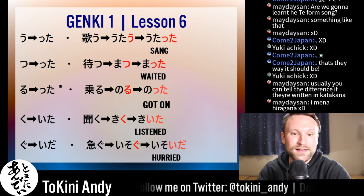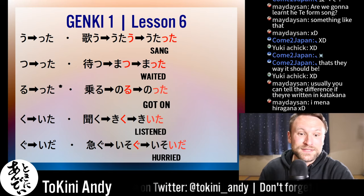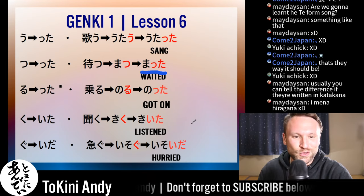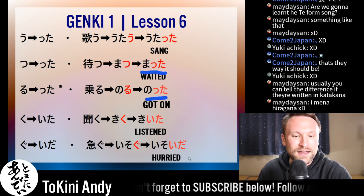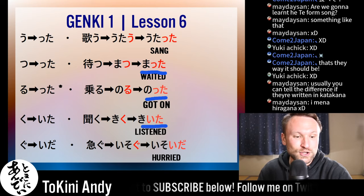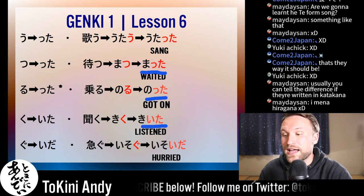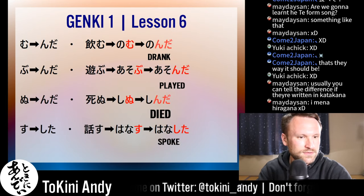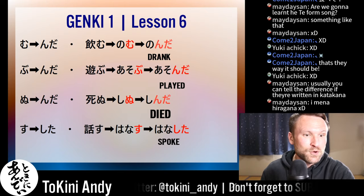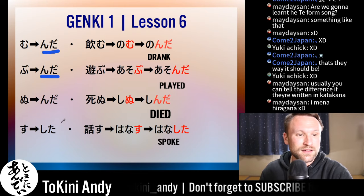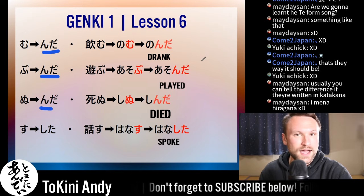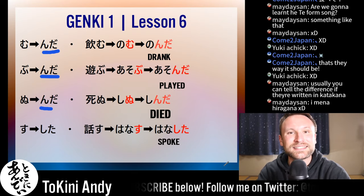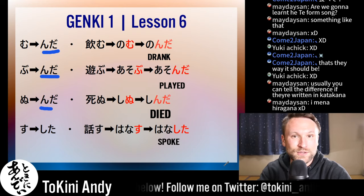Just super fast: 'utau' becomes 'utatta' — I sang. 'Matsu' becomes 'matta.' 'Noru' becomes 'notta' — I got on the train. Ku becomes 'ita' — 'kiita' — I listened. Gu becomes 'ida' — 'isoida' — I hurried. Mu becomes んだ instead of んで — 'nonda' (I drank), 'asonda' (I played), 'shinda' (I died — well, not yet). 'Hanashita' — I spoke. They're all exactly the same; just change 'de' to 'da' and 'te' to 'ta.'